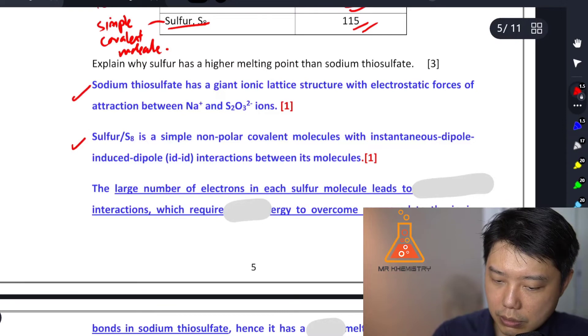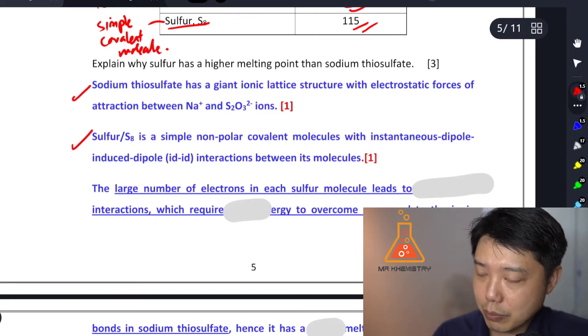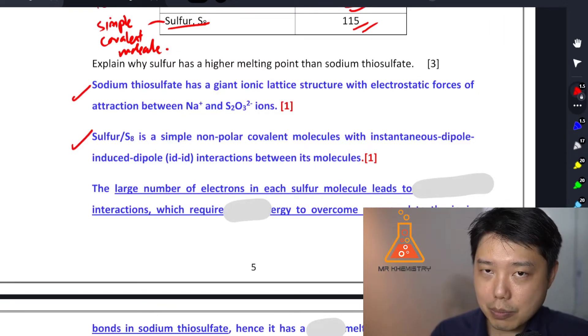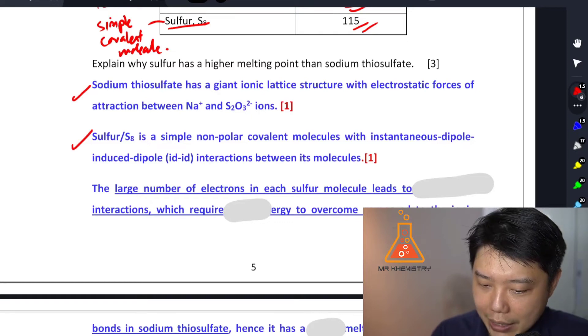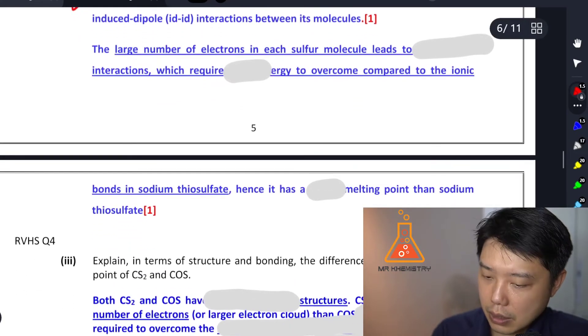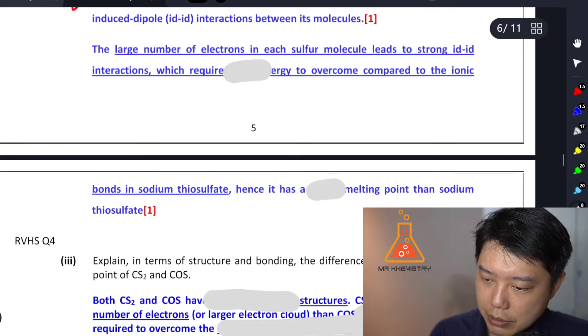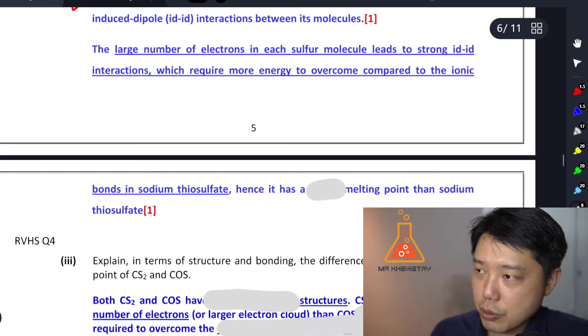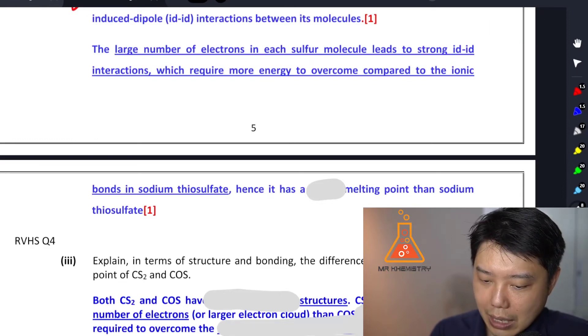So explaining the two structure and bonding will take up two marks, and then the last mark is just to explain why the sulfur has a higher melting point. So this last point: large number of electrons leads to strong id-id interactions which require more energy to overcome compared to the ionic bonds in thiosulfate.